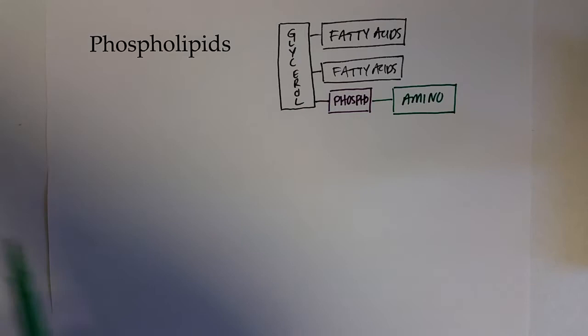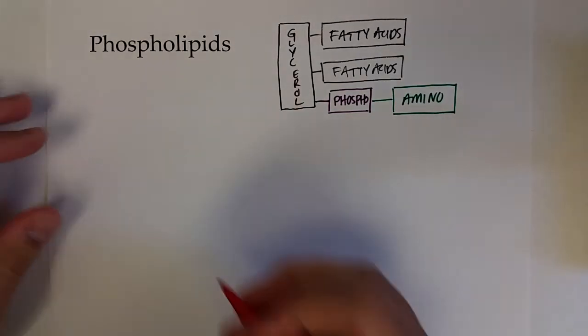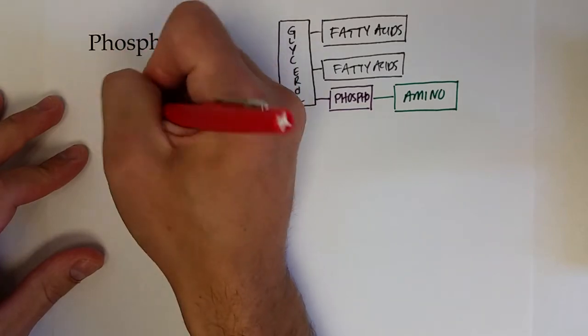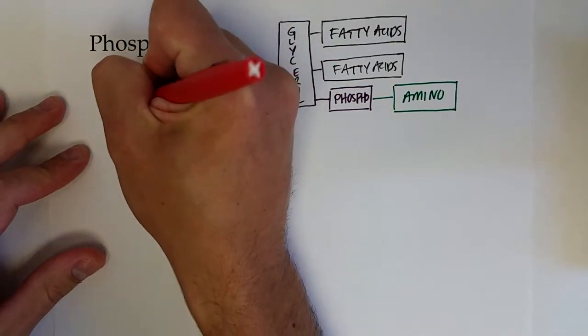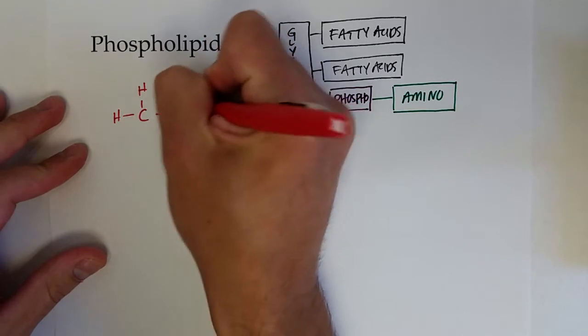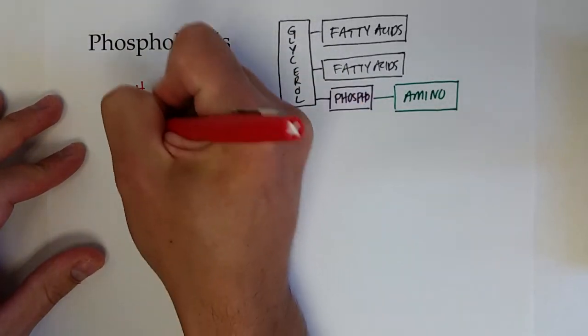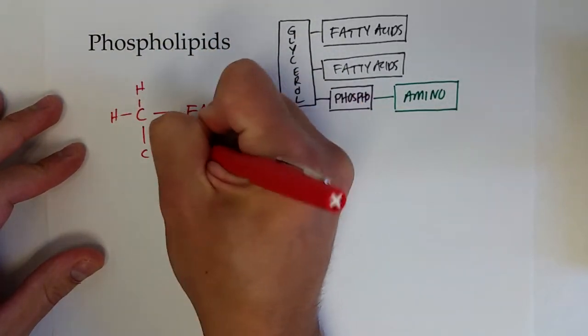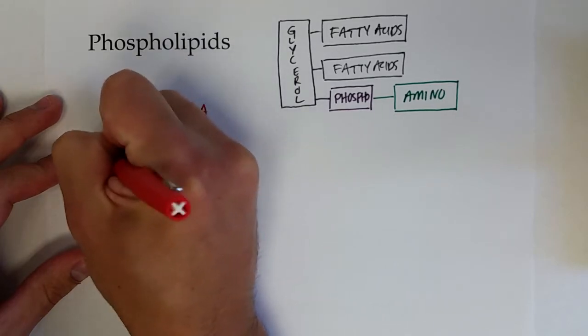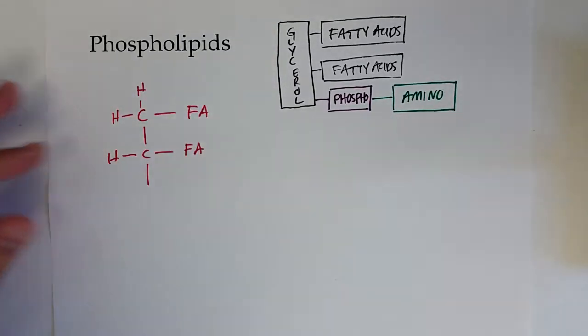All right, and so if we want to draw the structure of this molecule, we can start up here. It would be the first carbon on that glycerol that's connected to a fatty acid. The second one is also connected to a fatty acid and so we won't draw those structures again. But here's where they differ.